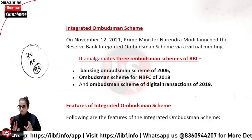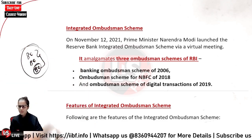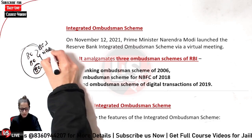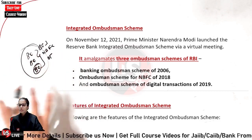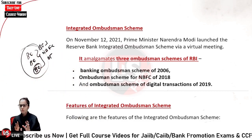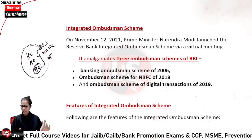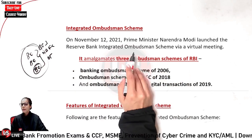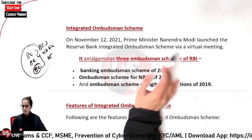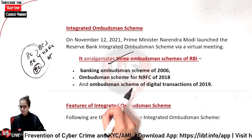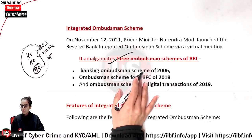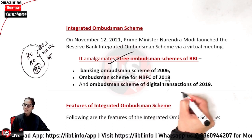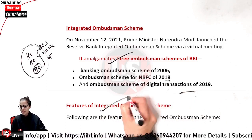The Integrated Ombudsman Scheme — 'integrated' meaning a combination. On November 12, 2021, Prime Minister Narendra Modi launched the Reserve Bank Integrated Ombudsman Scheme through a virtual meeting. It amalgamated 3 ombudsman schemes of RBI: the Banking Ombudsman Scheme of 2006, the Ombudsman Scheme for NBFCs 2018, and the Ombudsman Scheme for Digital Transactions 2019.